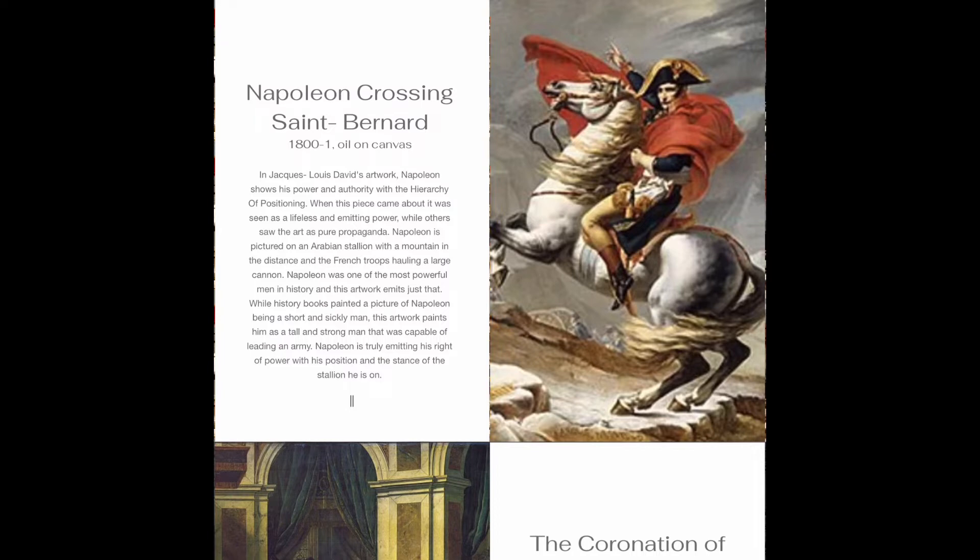Napoleon is pictured on an Arabian stallion with the mountains in the distance and the French troops hauling a large cannon behind him. Napoleon was one of the most powerful men in history and this artwork conveys just that.